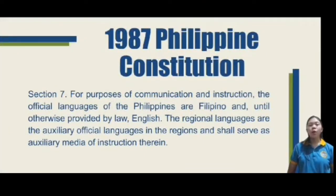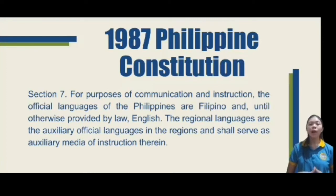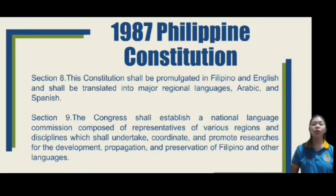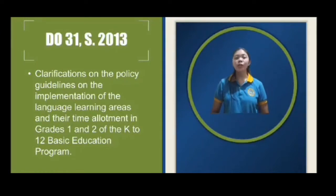In Section 7, for purposes of communication and instruction, the official languages of the Philippines are Filipino and, until otherwise provided by law, English. The regional languages are the auxiliary official languages in the regions and shall serve as auxiliary media of instruction therein. In Section 8, the Constitution shall be promulgated in Filipino and English and shall be translated into major regional languages, Arabic and Spanish. In Section 9, the Congress shall establish a national language commission to undertake, coordinate, and promote researches for the development, propagation, and preservation of Filipino and other languages.